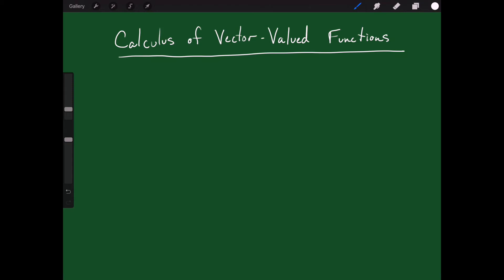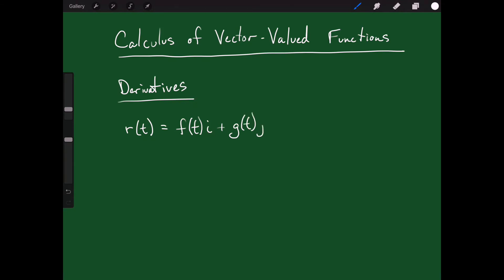Welcome back. Today I'd like to talk to you a little bit about the calculus of vector-valued functions, and today let's start with derivatives. So we understand now what a vector-valued function is. Typically a vector-valued function looks something like r of t equals f of t times i plus g of t times j plus h of t times k.